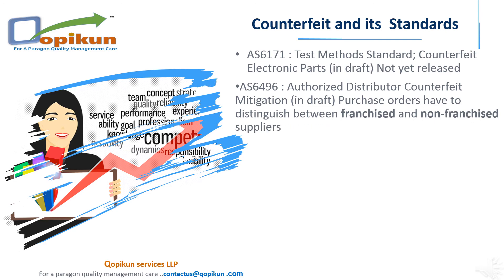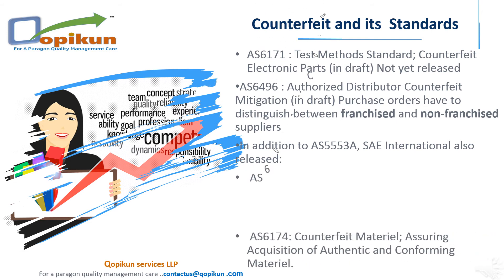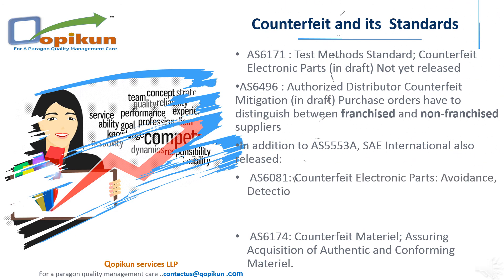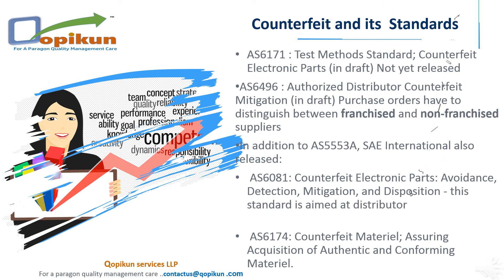Purchase orders have to distinguish between franchised and non-franchised suppliers. In addition to AS5553A, SAE International also released AS 6081 — Counterfeit Electronic Parts, Avoidance, Detection, Mitigation, and Disposition. This standard is aimed at distributors selling to aerospace and defense manufacturers.